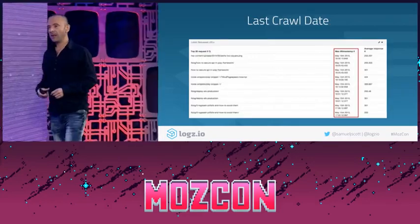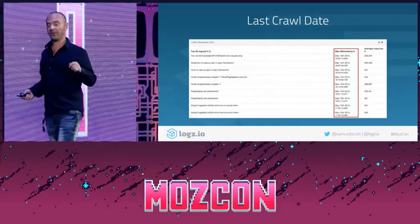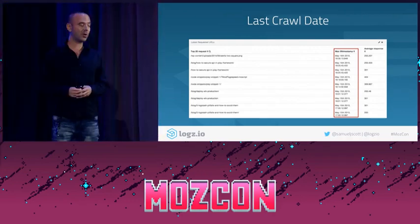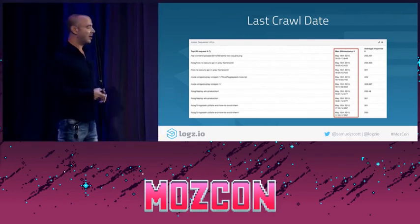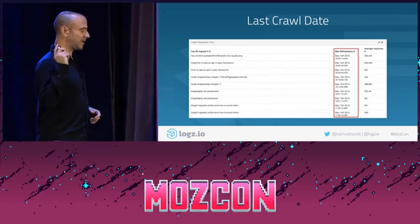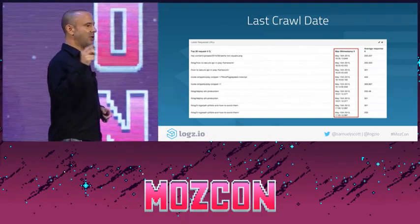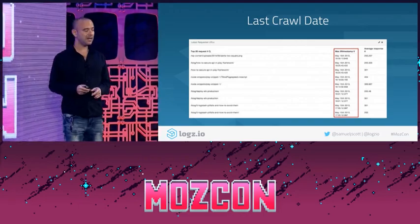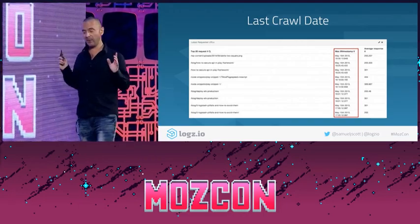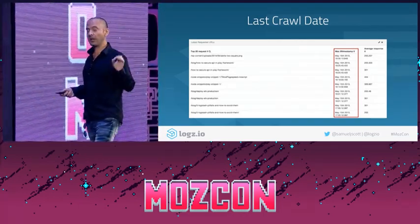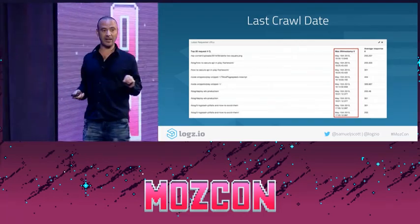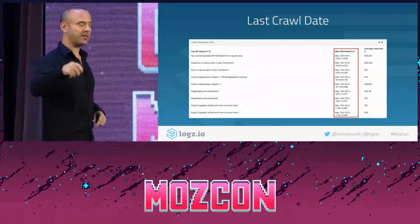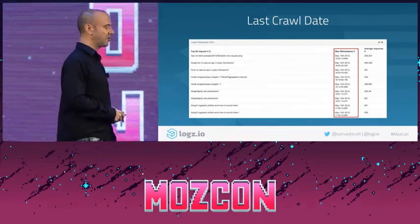Last crawl date. Did you make a change to a page and want Google to crawl and index it straight away? You can look in your log files to see the last time that Googlebot crawled any URL, image, file, or page. If you've updated or created a new page and Google hasn't found it yet and it's critically important, then you can submit that URL directly in Google Search Console.